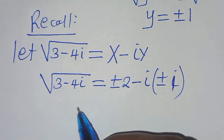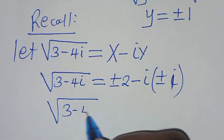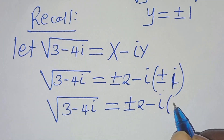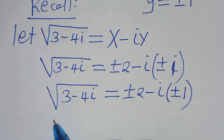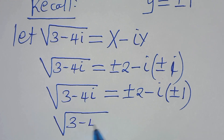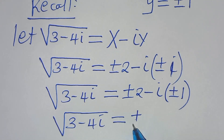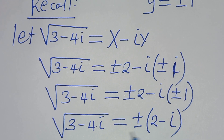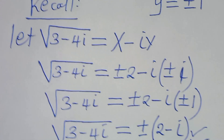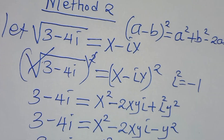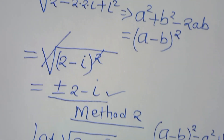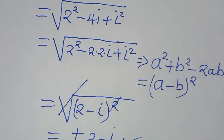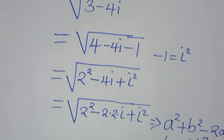Therefore, the square root of 3 minus 4i is equal to plus or minus 2 minus i. So this is the solution by applying method 2. Both method 1 and method 2 give the same result. So kindly follow the steps. If you have alternative methods to solve this, kindly don't hesitate to showcase in the comment section. Follow the steps, like this video, and subscribe.